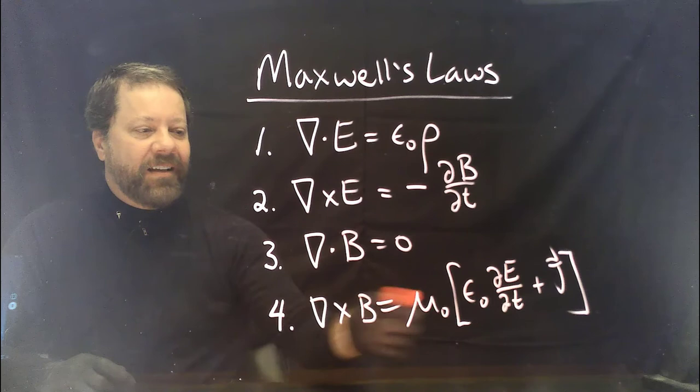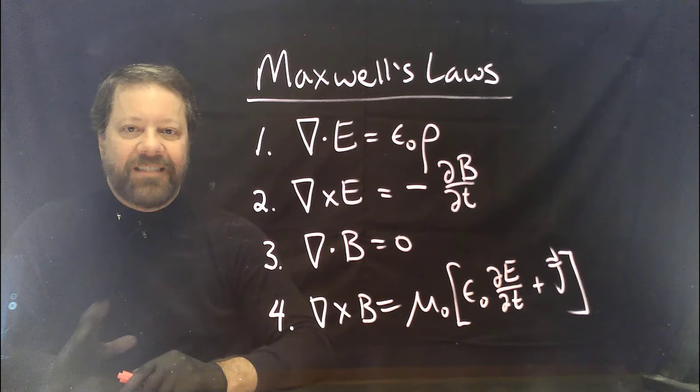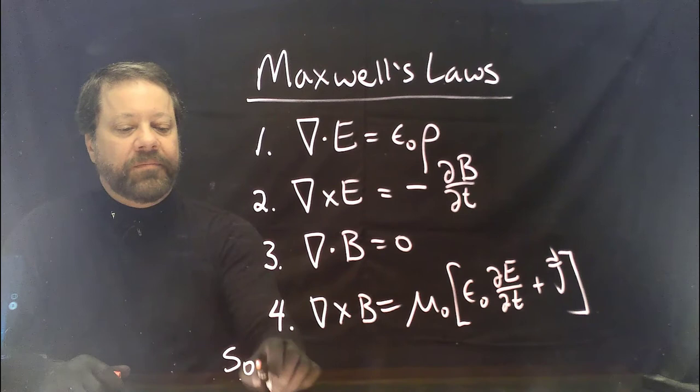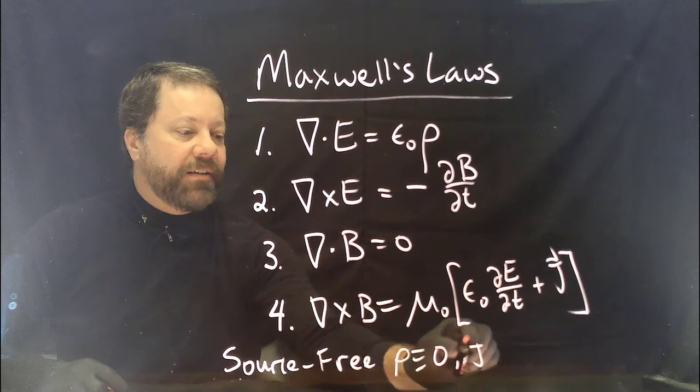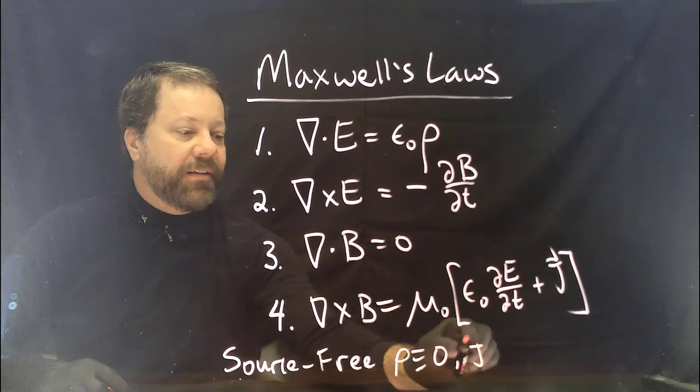For the magnetic field: the divergence of B is zero — it's all curl, no divergence. And then the curl of B is mu-naught epsilon-naught times the partial derivative of E with respect to time, plus a current vector j. This gives a complete description of the electric and magnetic fields. Sources are charge density rho and current j. In the source-free case we set charge density and current identically to zero.